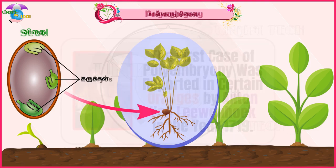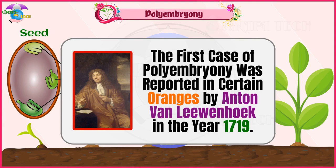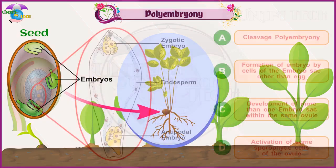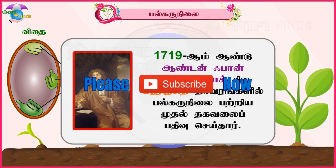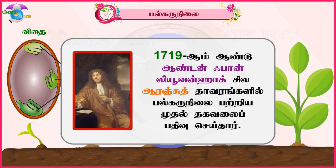The first case of Polyembryony was reported in certain oranges by Anton van Leeuwenhoek in the year 1719. Polyembryony is divided into four categories based on its origin.